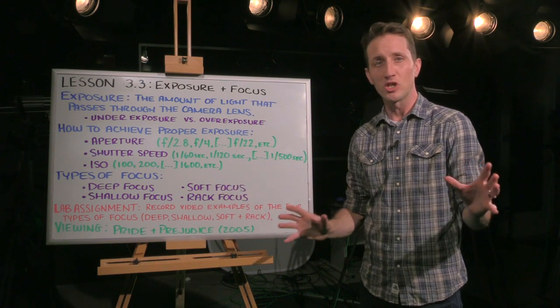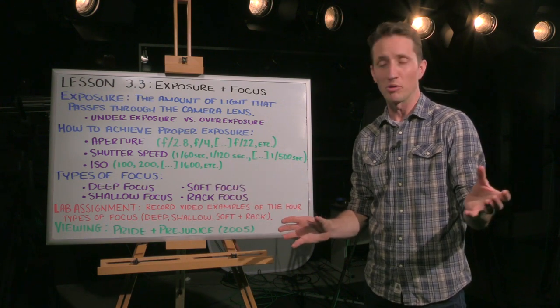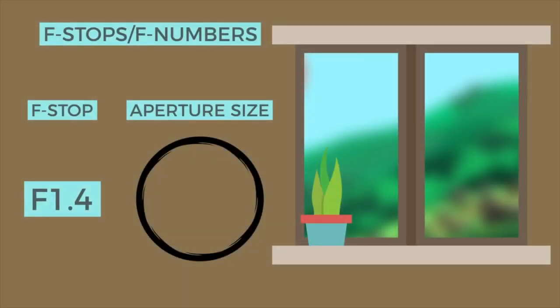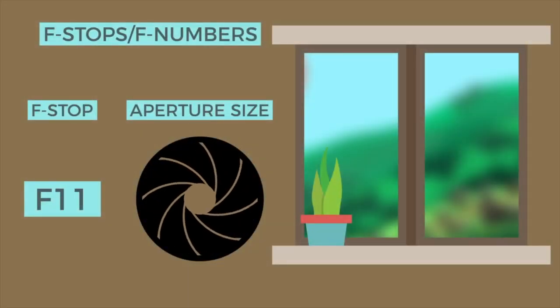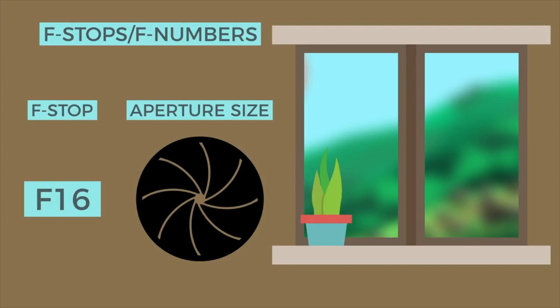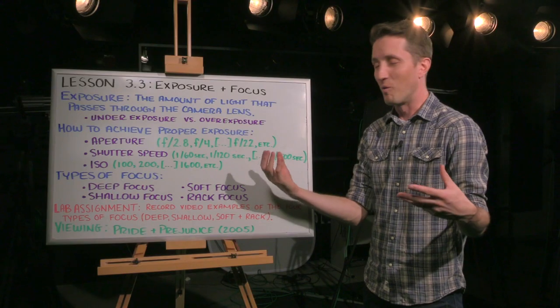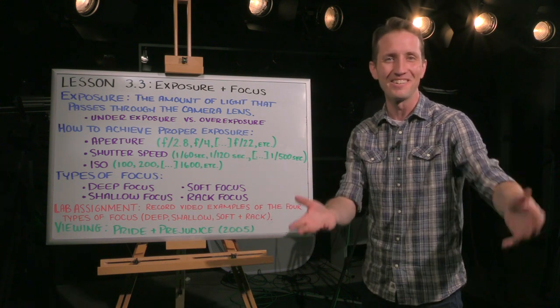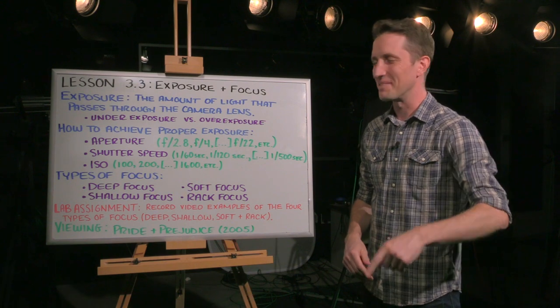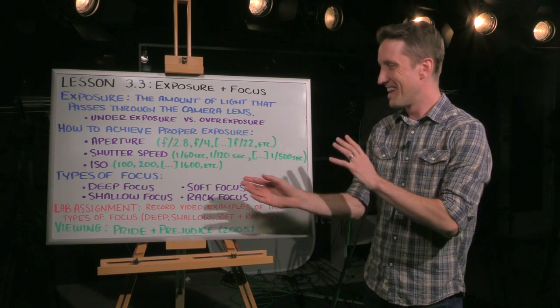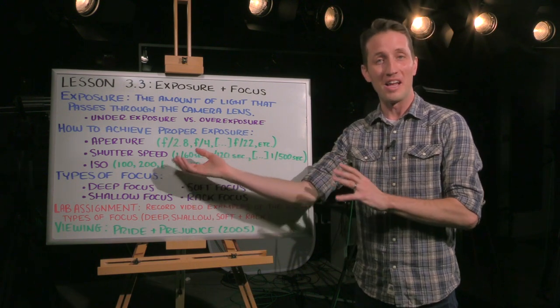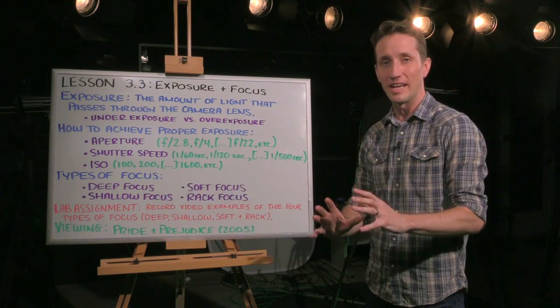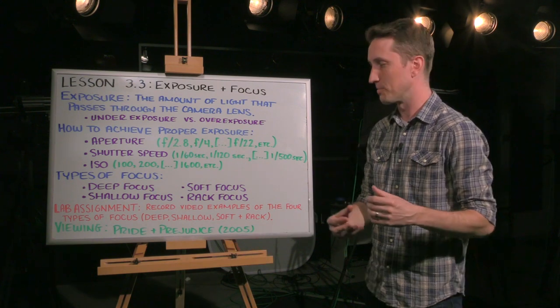The aperture is how much light you're allowing into the camera. You can have a very open aperture with a small f-stop or you can have a very small aperture with a very large f-stop. Why did they do that? Because confusing you is their game. And with a very small f-stop or a very large aperture, you are allowing a ton of light into the camera.